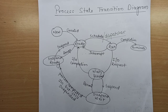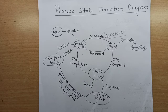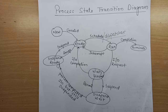Hello learners, here we are with the next video in process management. We have completed the introduction to processes and the process control block — the data structure used to store the attributes of a process in main memory. One thing I forgot to mention: those PCBs of each process are also stored in the main memory.